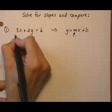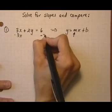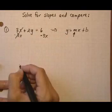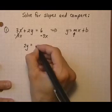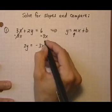So we need this 3x term to go away. Take away 3x on both sides. That's gone. I get 2y equals - I'm going to keep the x term first - negative 3x plus 6.